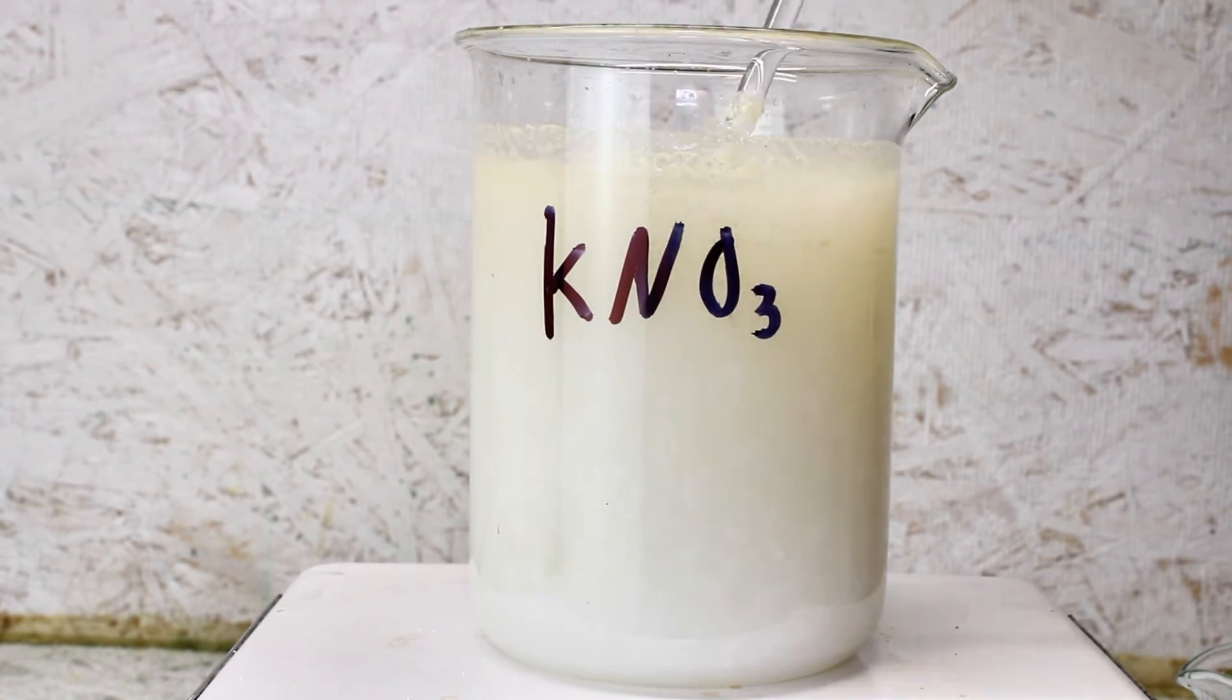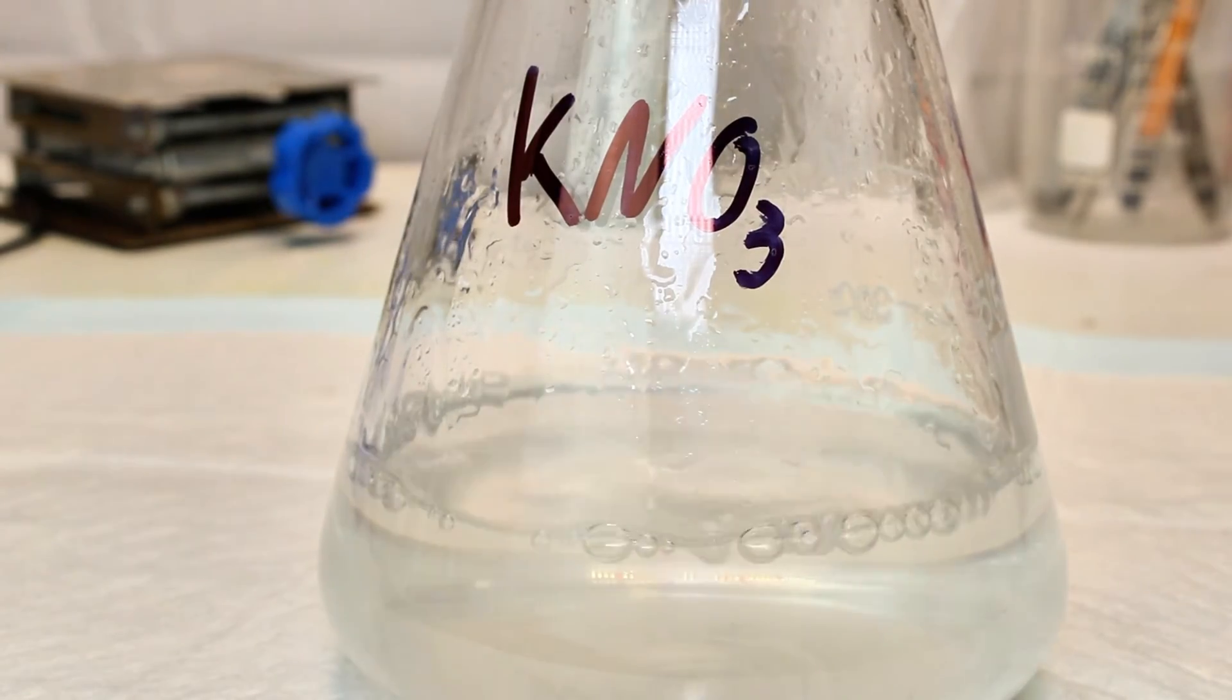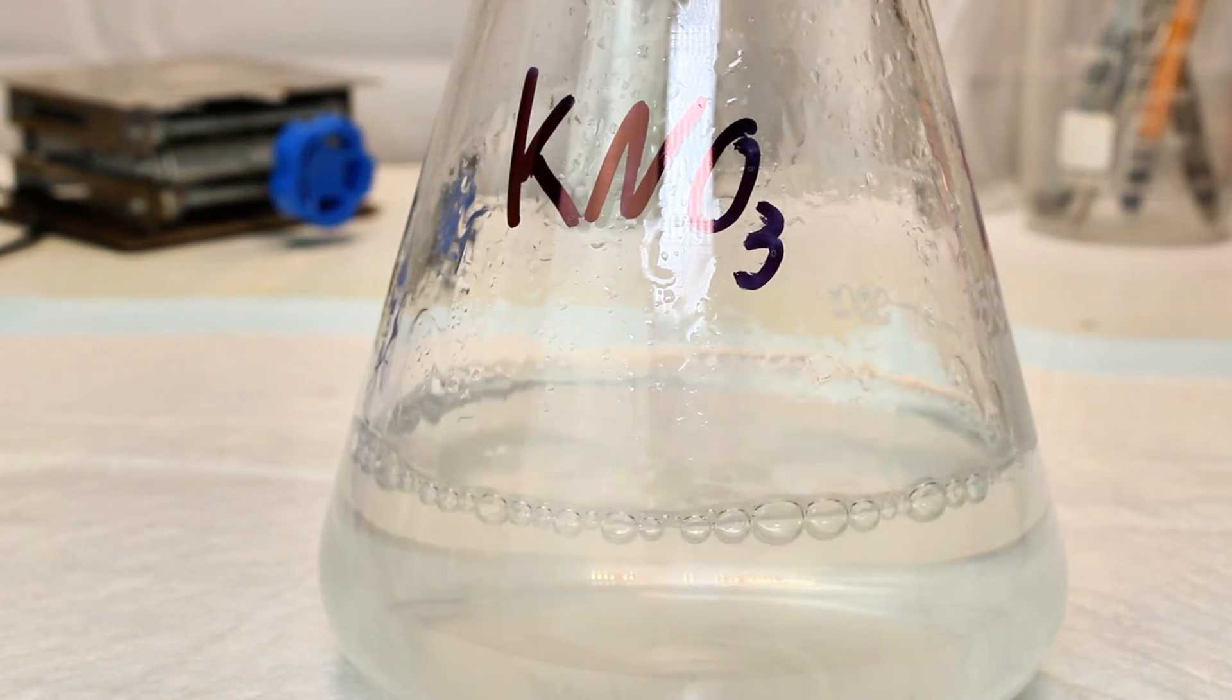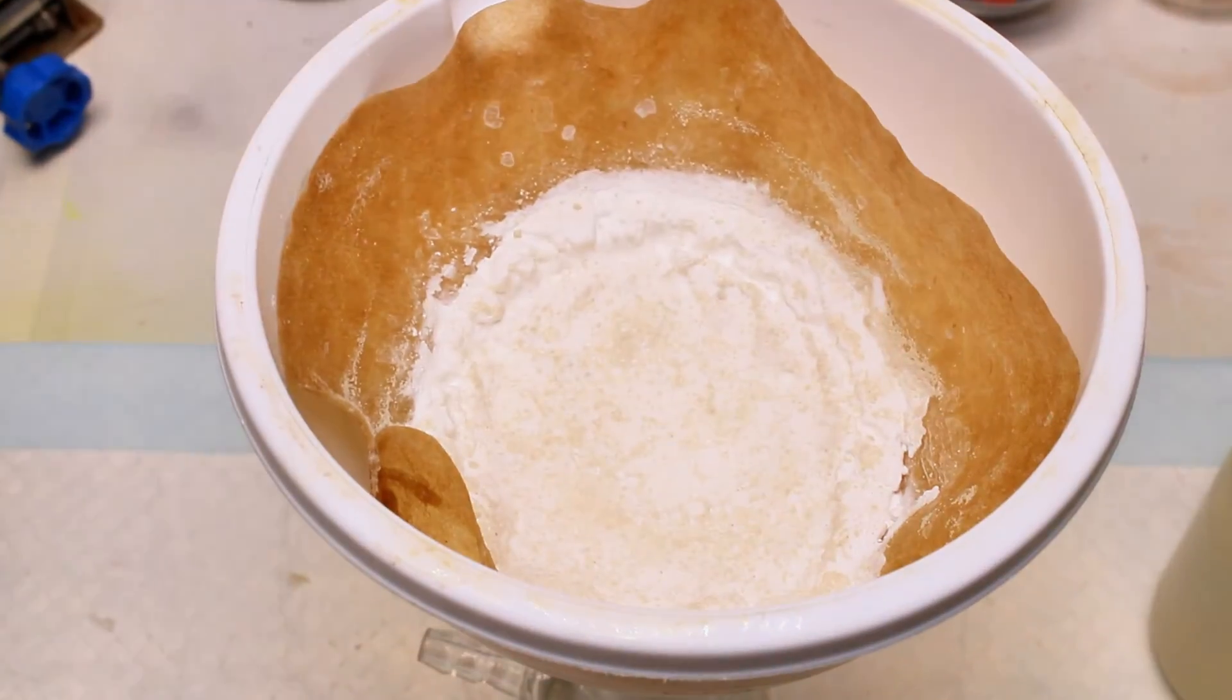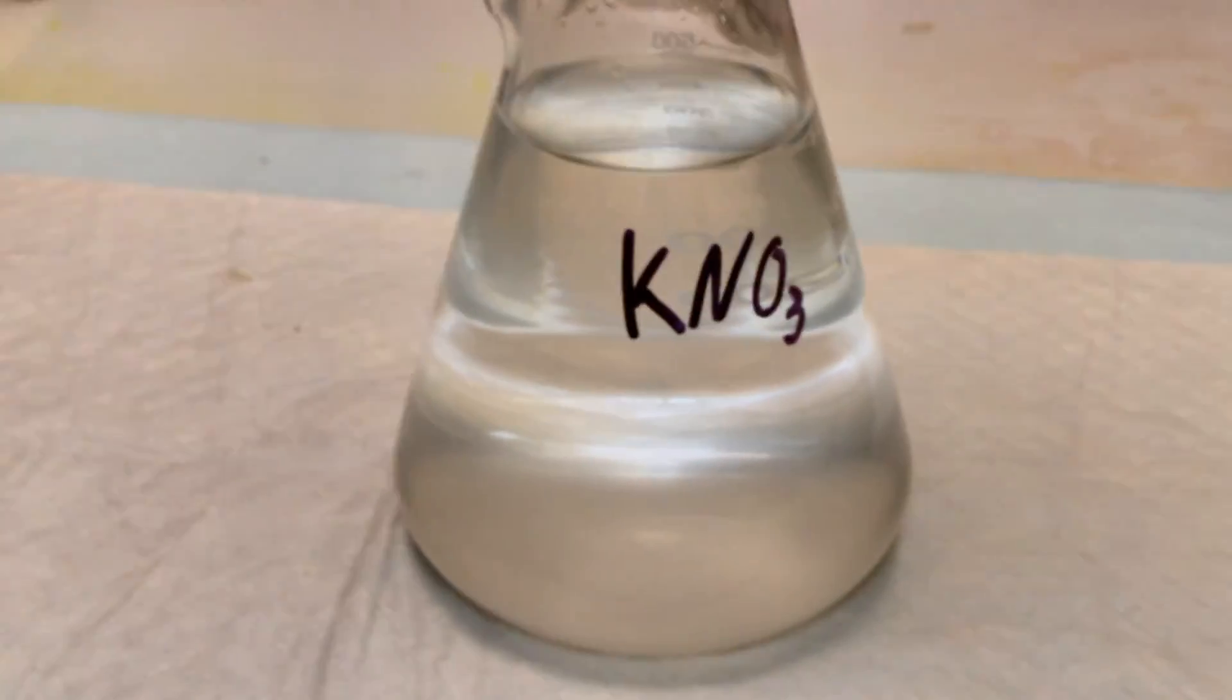Anyway, once both salts are completely dissolved, I simply mix them together thoroughly. This will immediately result in the precipitation of the highly insoluble calcium carbonate, while potassium nitrate will stay suspended in solution.